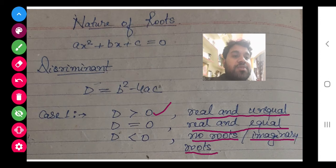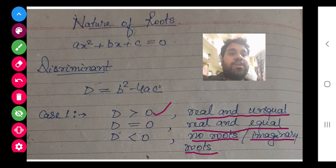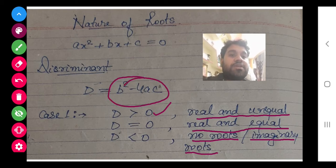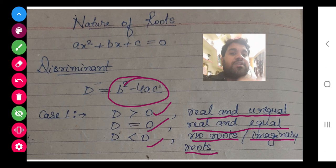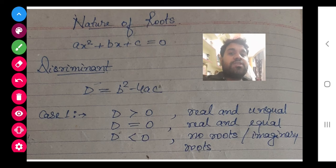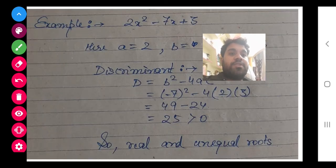Talking about D smaller than zero — then no real roots, and these roots are also known as imaginary roots. So again I am repeating: first of all we have to find the discriminant, then we have to check these three conditions — greater than zero (positive), equal to zero, or smaller than zero (negative). After that we can analyze whether it is a real root, or imaginary.